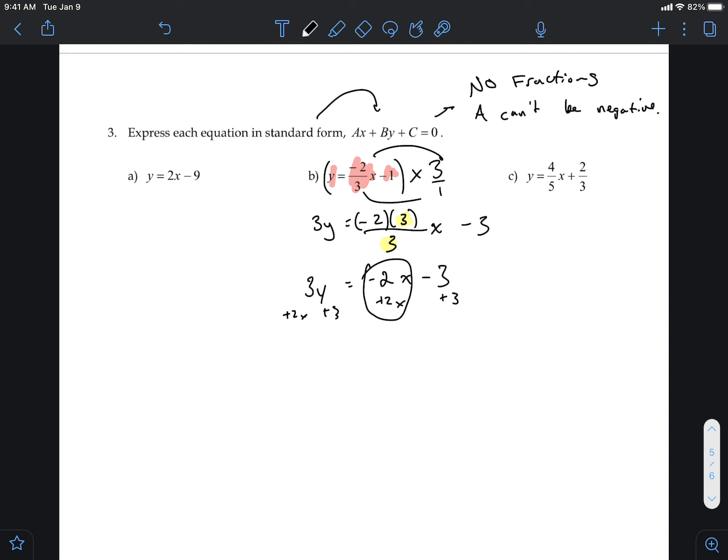So on the left you can rewrite all three of these things to look like this now. Right, I'm going to have plus or you don't even have to write the plus. It's just 2x plus 3y plus 3 equals zero.